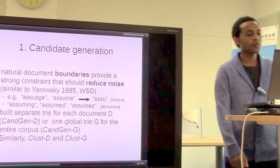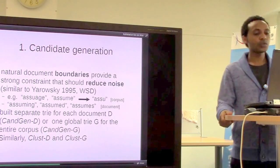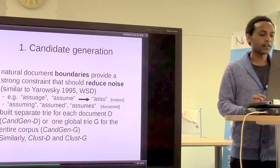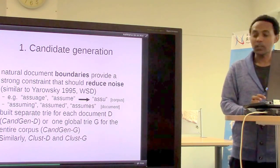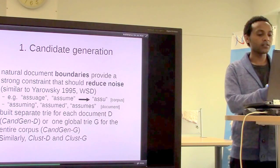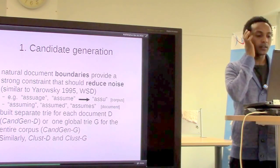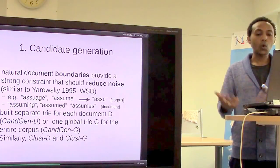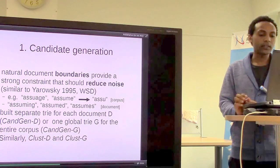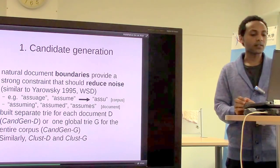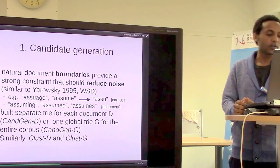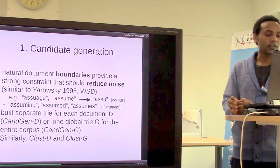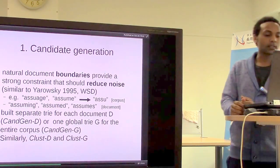For this, they built two types of tries: one is a separate trie for each document, referred to as CandGen-D — document-wide candidate generation; and another is a trie for the whole corpus, the global trie, represented as CandGen-G. Similarly, for word clustering, there is document-wide clustering and global clustering.